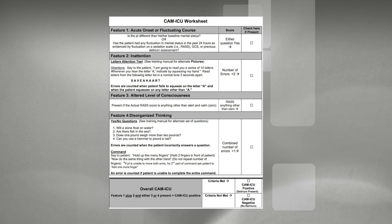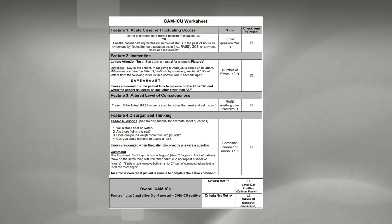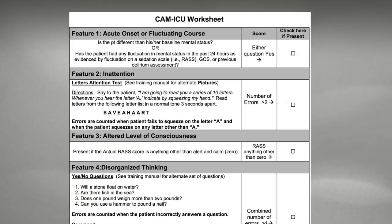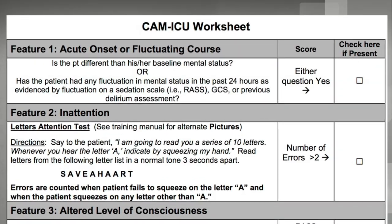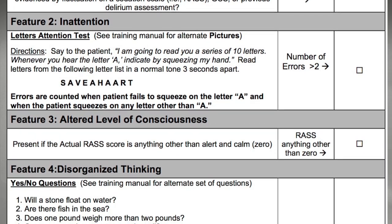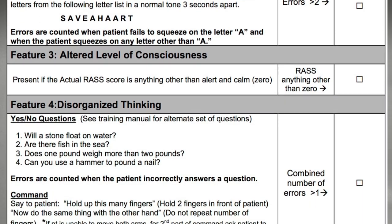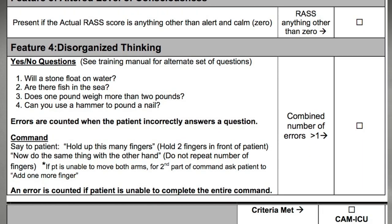The CAM-ICU assessment has four separate categories to test: acute onset or fluctuating course, inattention, altered level of consciousness, and disorganized thinking.